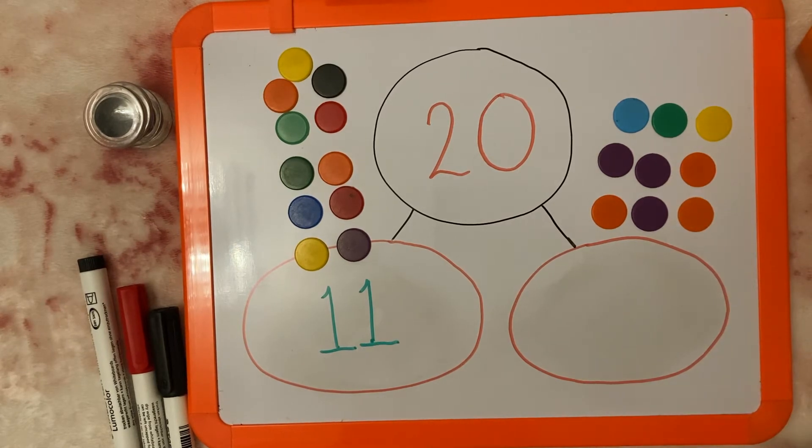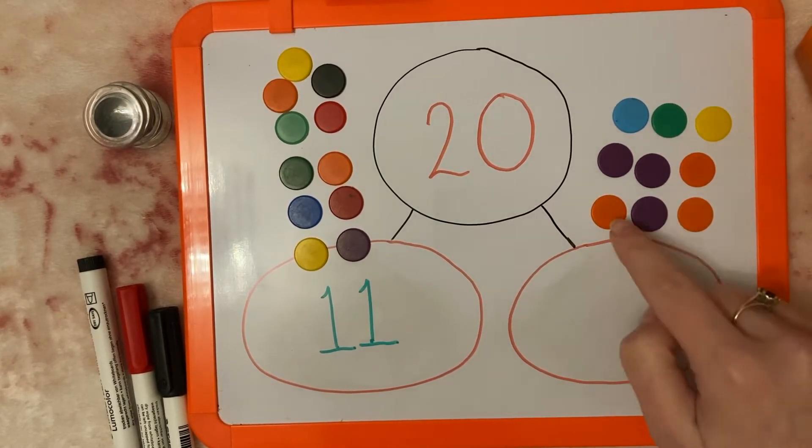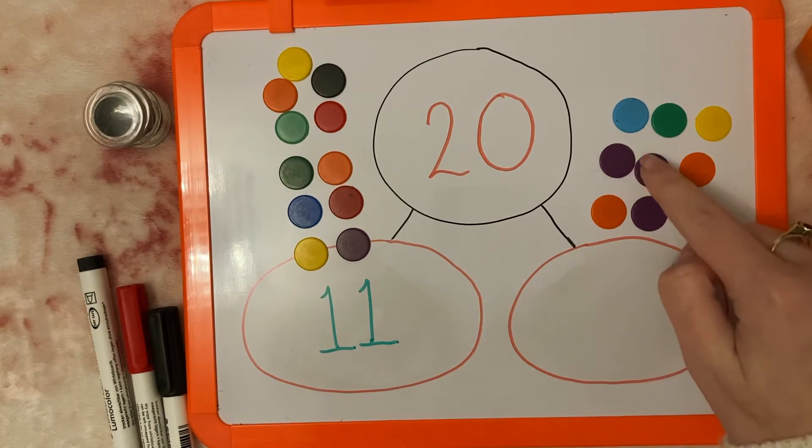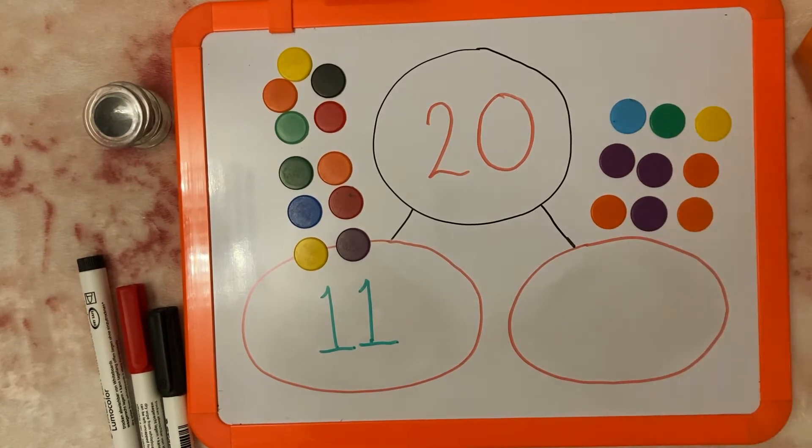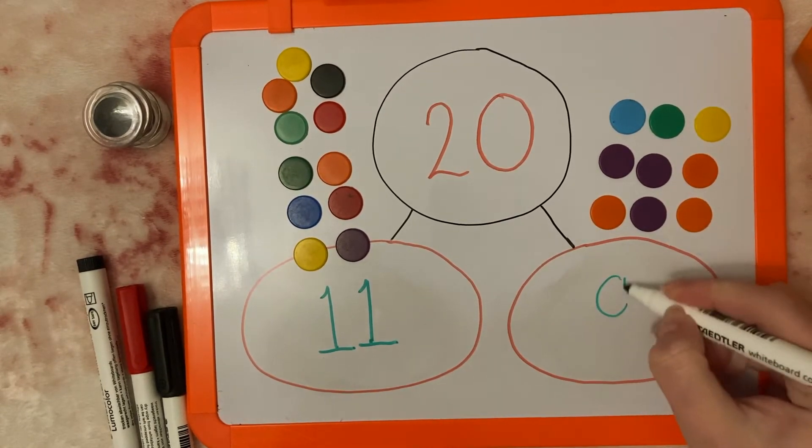Okay, now let's check how many we've added on to 11. 1, 2, 3, 4, 5, 6, 7, 8, 9. So I would put number 9 in there.